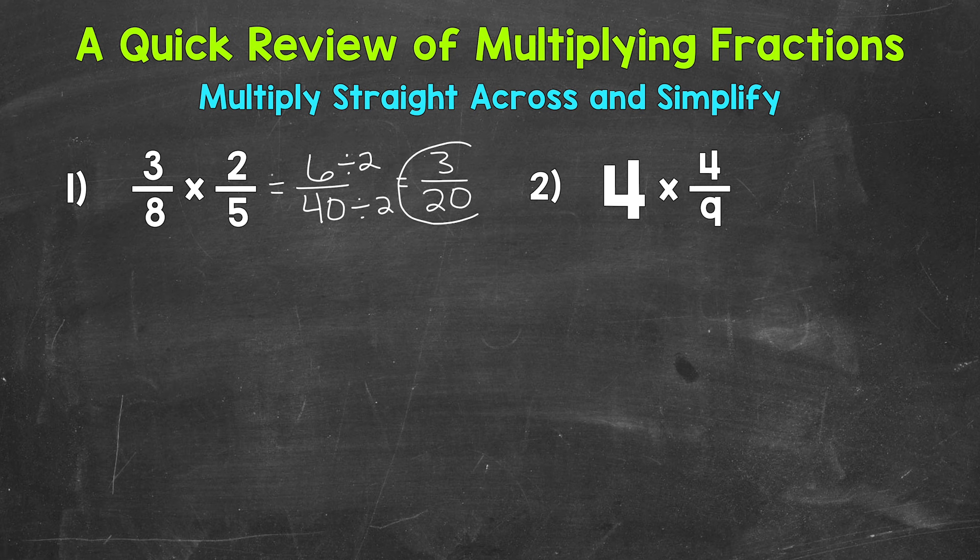Let's move on to number 2, where we have 4 times 4 ninths. So, we have a whole number times a fraction. Now, we need to rewrite that whole number as a fraction before we start. Now, in order to put a whole number in fractional form, all we need to do is put it over 1.